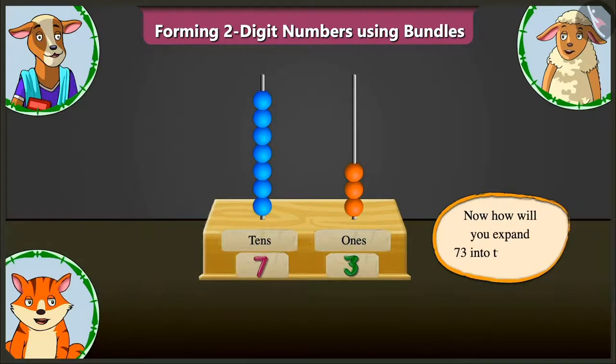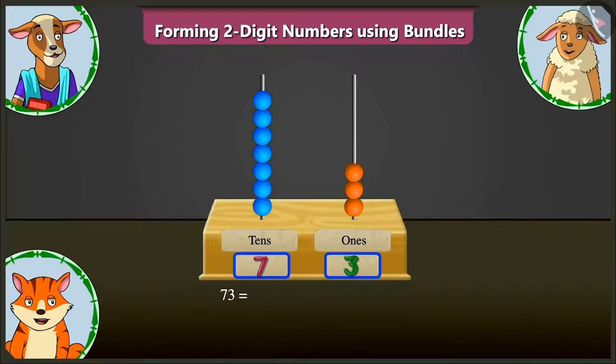Now, how will you expand seventy-three into two parts? Seventy-three means seven tens and three ones. Meaning, its two parts will be seventy and three. Well done.